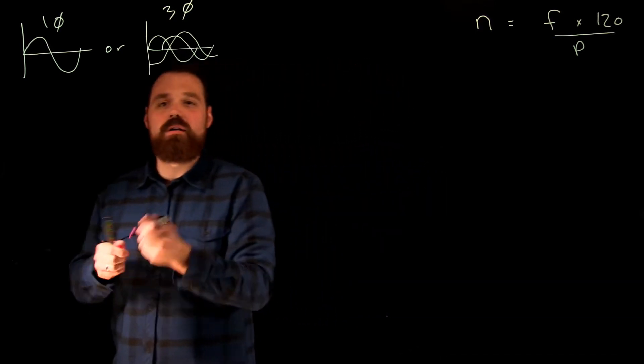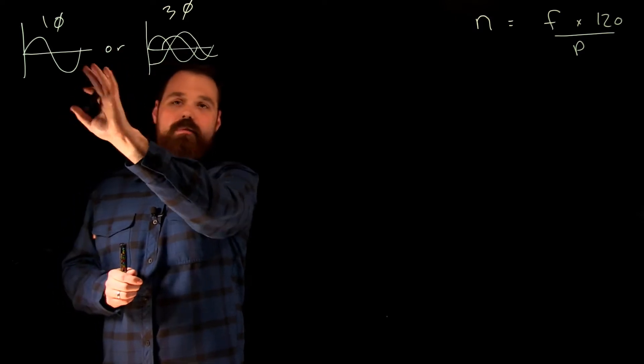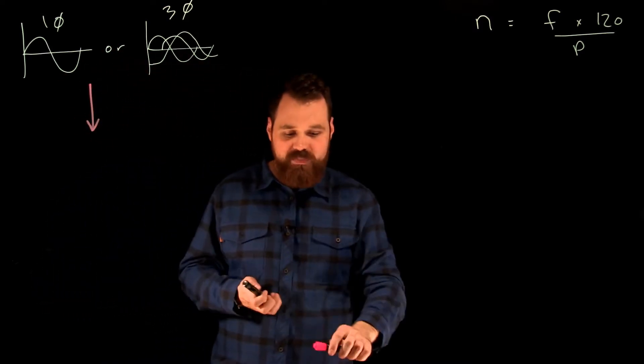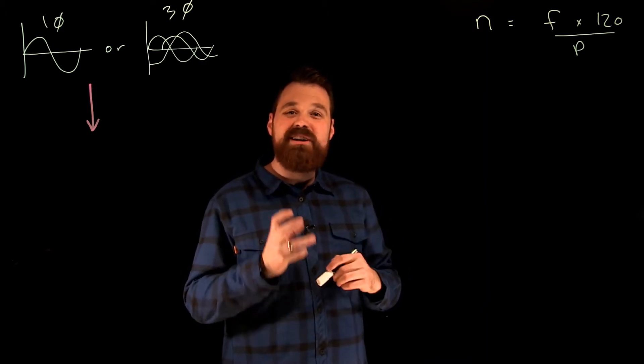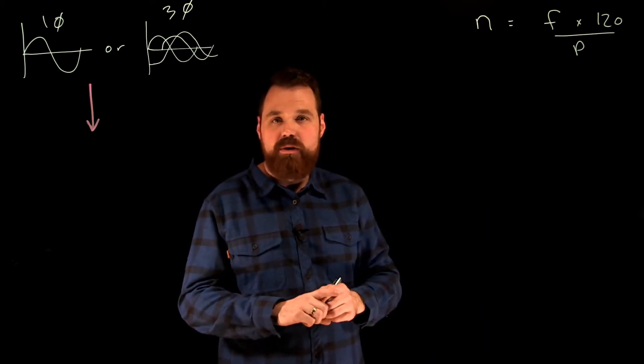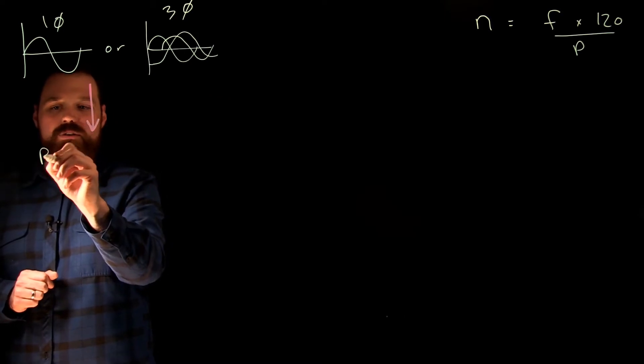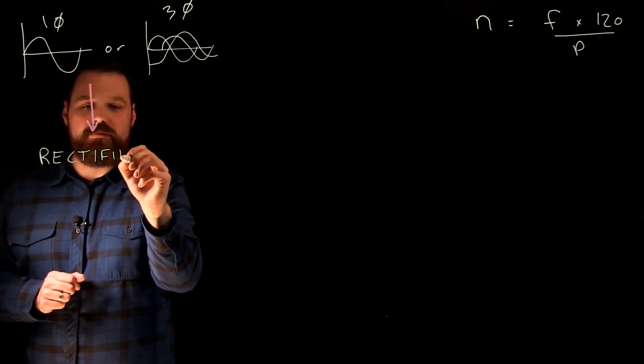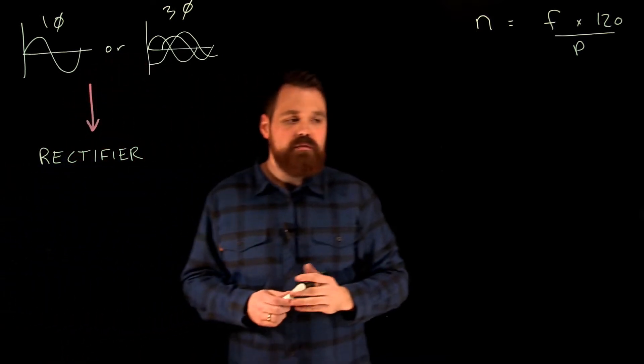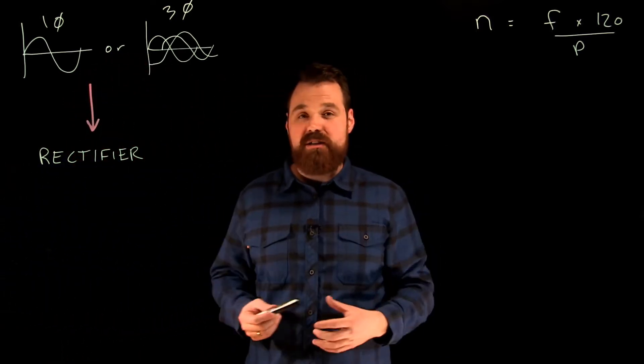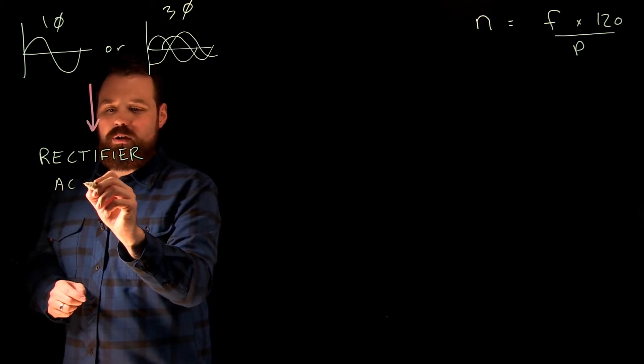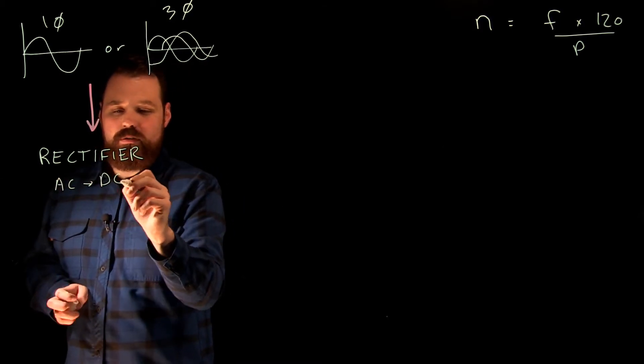We take our power, single-phase or three-phase, and punch it into the VFD. The VFD has three different sections inside of it. The first section it goes into is a rectifier.